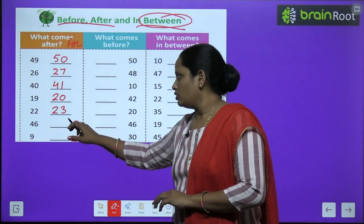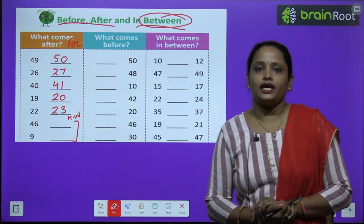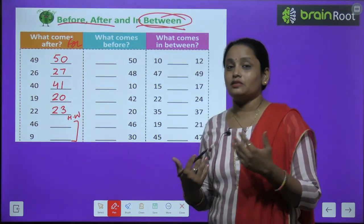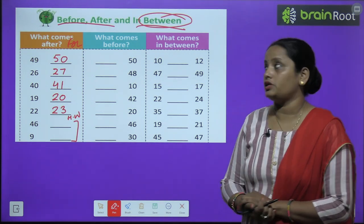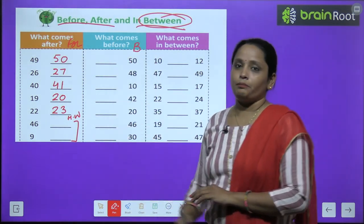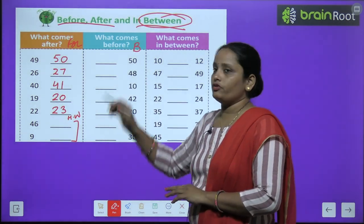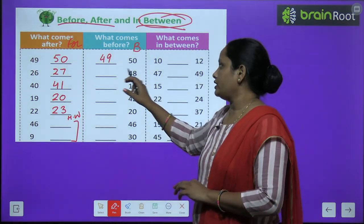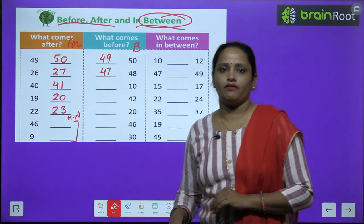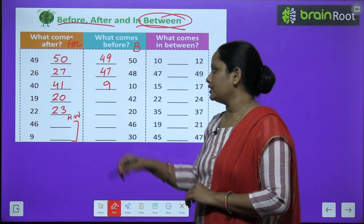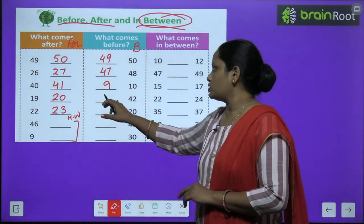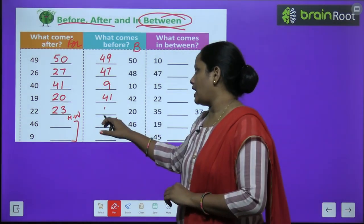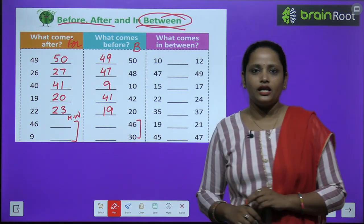So these two are homework. Next, what comes before? Before means pehle. Before means B, aur B ka matlab hai backward counting. Toh yahan par humein backward counting karni hai. Toh 50 se pehle kaunsa number aata hai? Forty-nine. 48 se pehle, forty-seven. Ten se pehle, nine. Forty-two se pehle, forty-one. Twenty se pehle, nineteen. These two are homework.